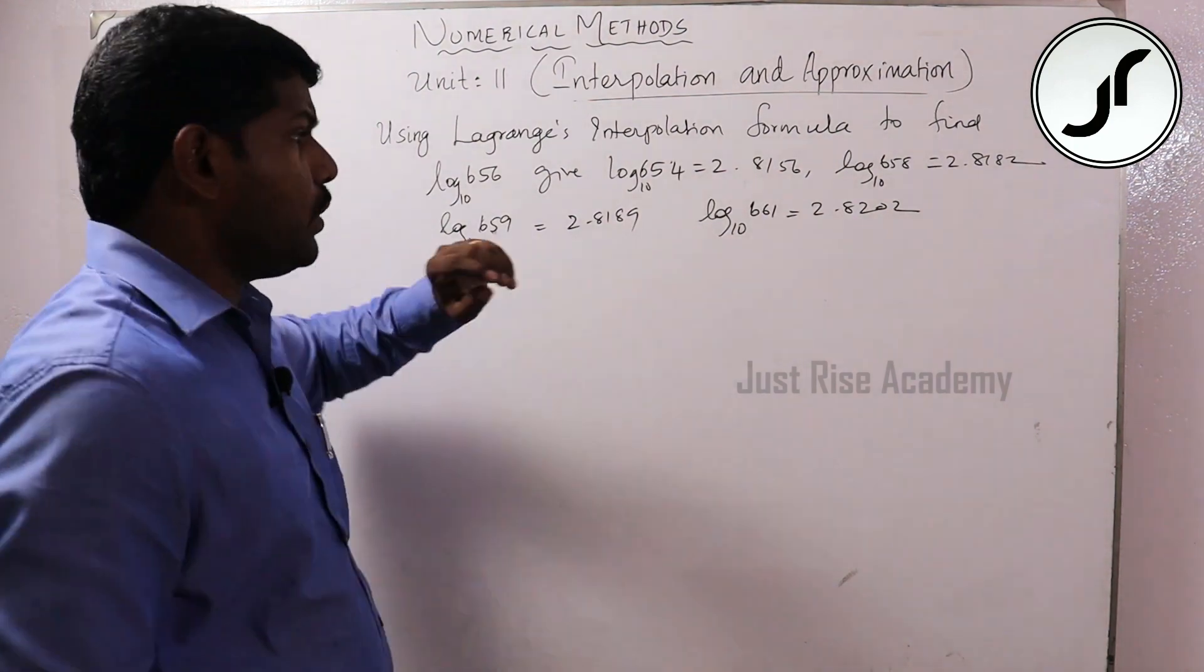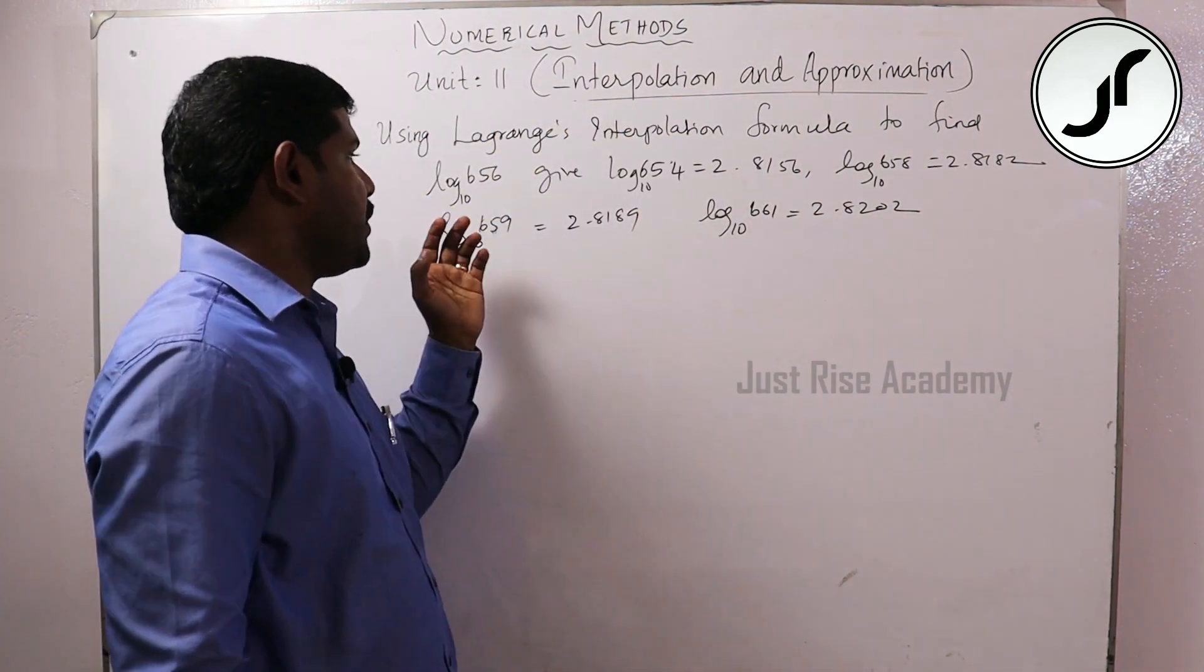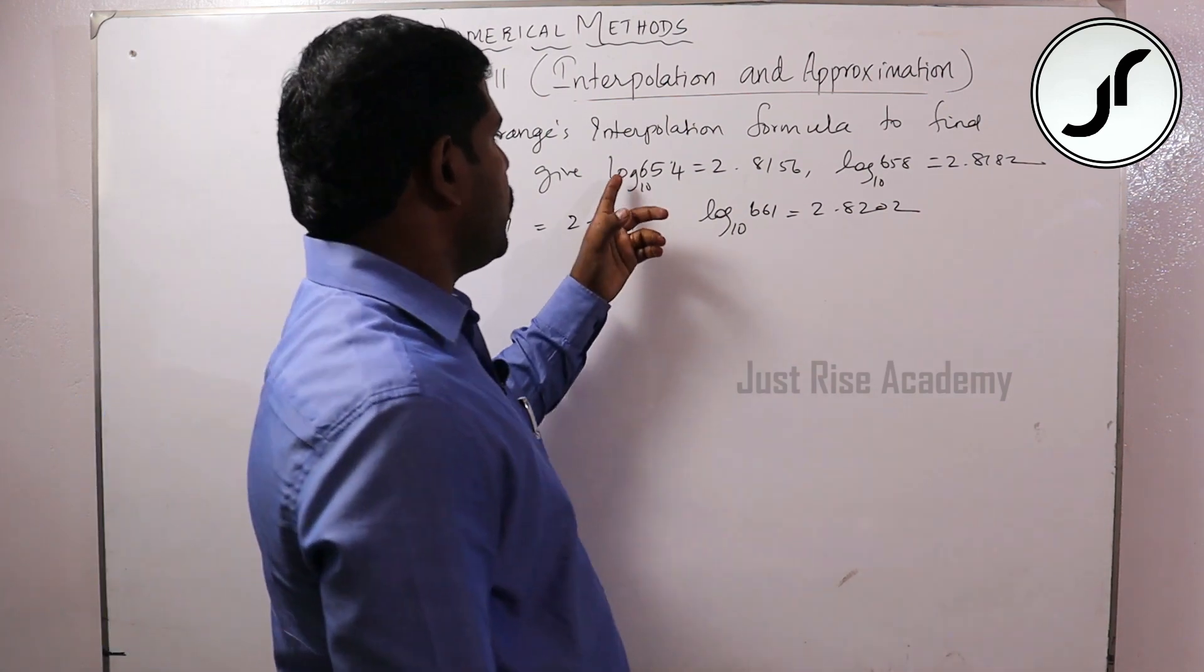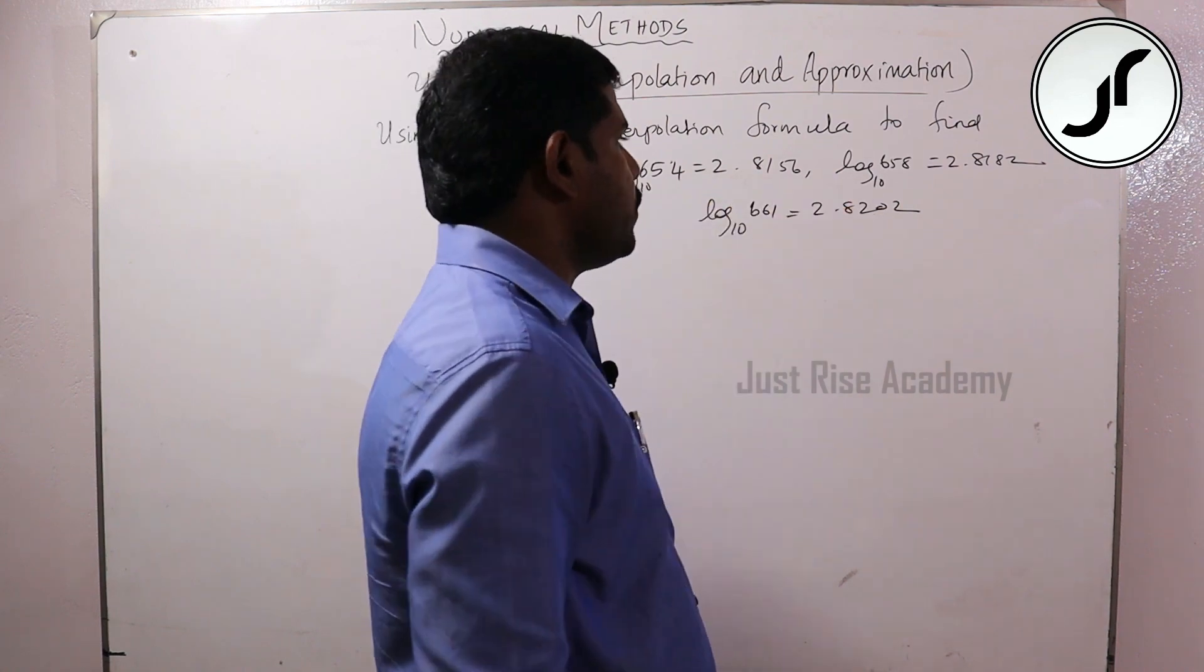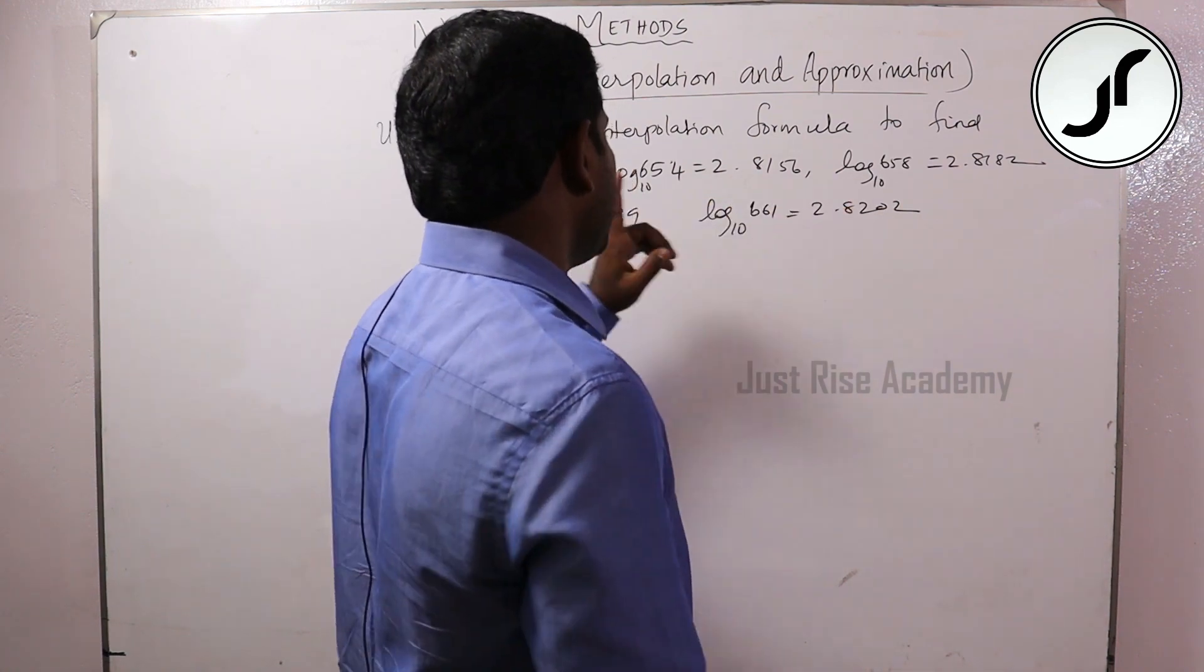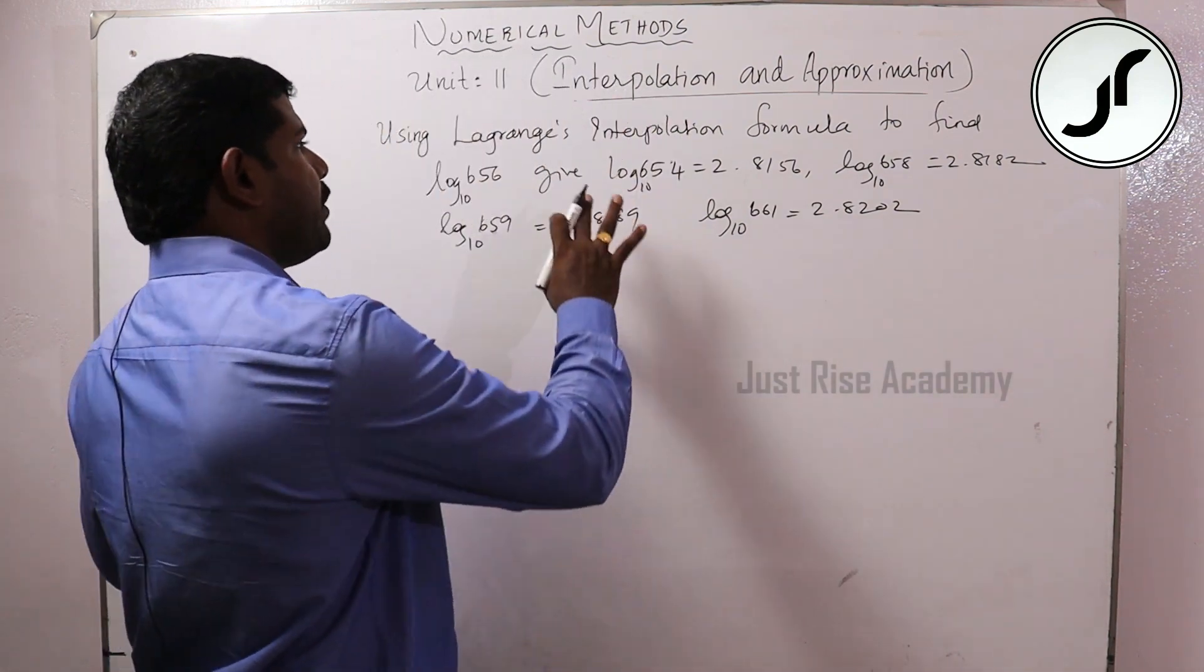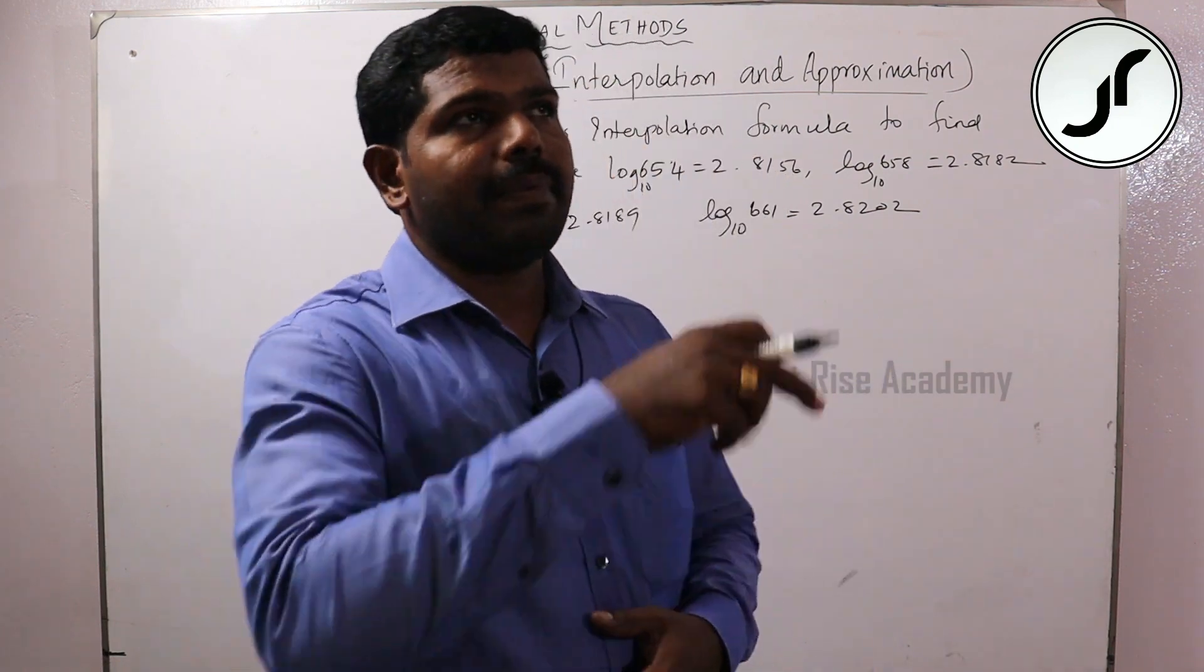So we are going to the next problem using Lagrange's interpolation formula to find log 656. Given: log 654 equals 658 equals 2.659, 661 equals this. So the problem is Lagrange's interpolation formula.